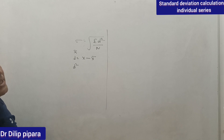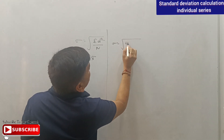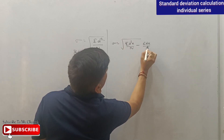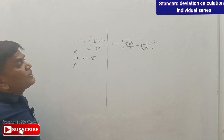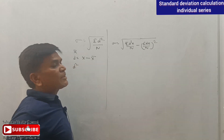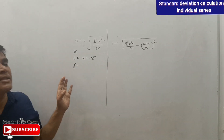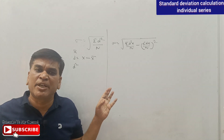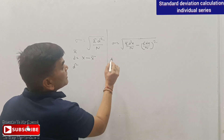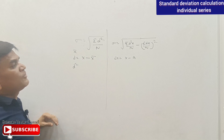As far as the assumed mean method is concerned, the formula is: sigma D²x upon N minus (sigma Dx upon N) raised to the power 2. This may be used when calculating the arithmetic mean directly is difficult. The Dx here is X minus the assumed mean, whatever value we assume. This formula is the indirect assumed mean method, already discussed in the previous video.